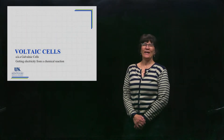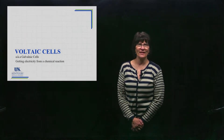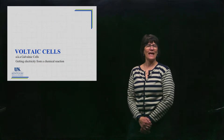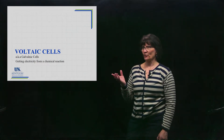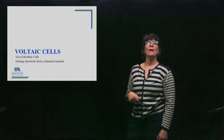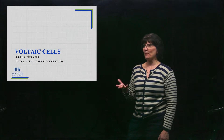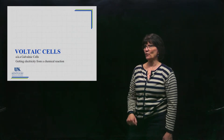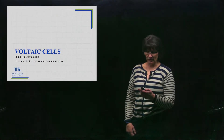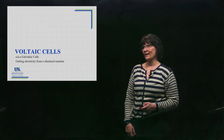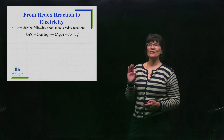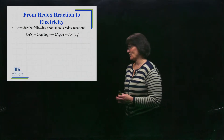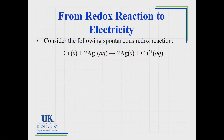We're trying to get electricity out of spontaneous chemical reactions, and we know they need to be a redox reaction. We're going to see the apparatus that can do this — they're called voltaic cells or galvanic cells. Let's look at this specific reaction on the computer screen and walk through it.